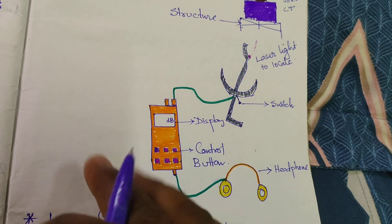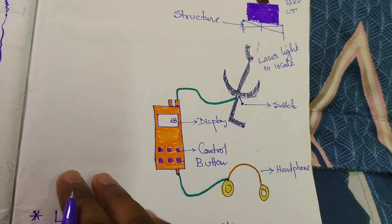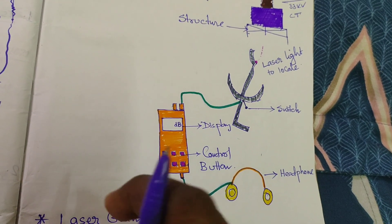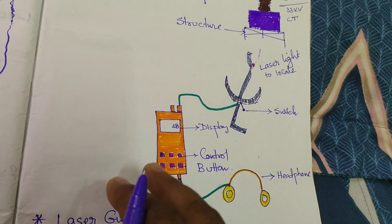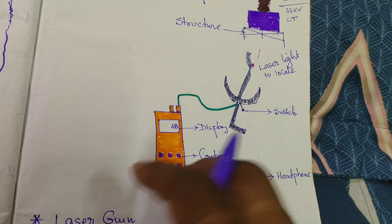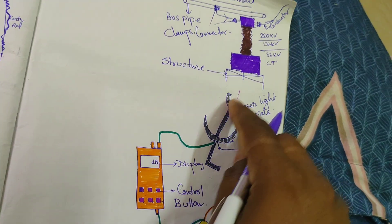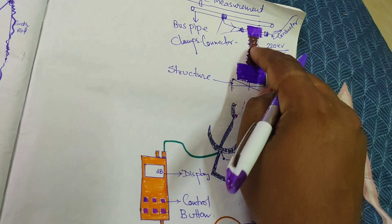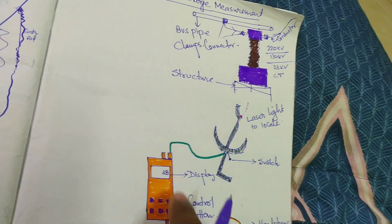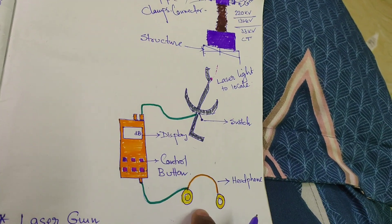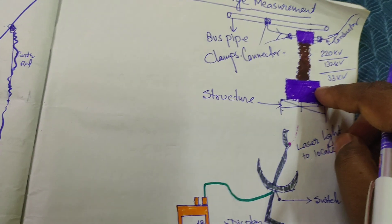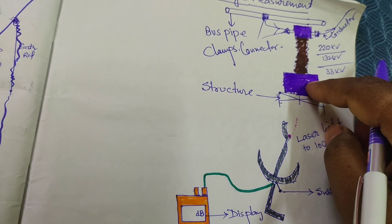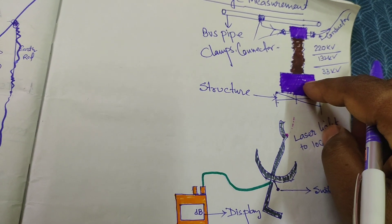To get the same results, maintain the same distance — 25 meters or more — and you will get the same results. So you don't have to go nearer to the position; just locate the laser to the particular part you want to test, and the test result will show on the display and you can hear the noise. For example, I am considering the current transformers — but you can also measure this PD test on power transformers.